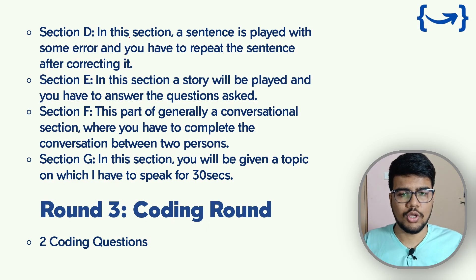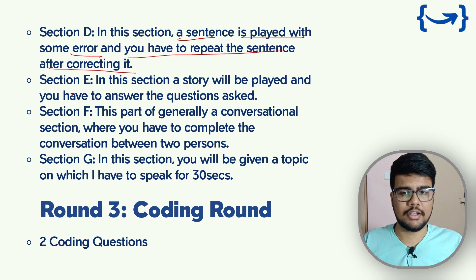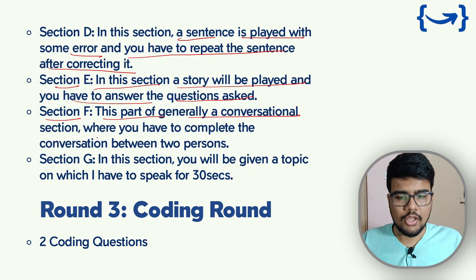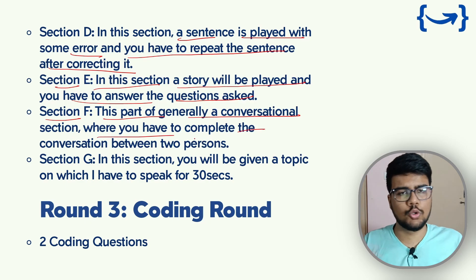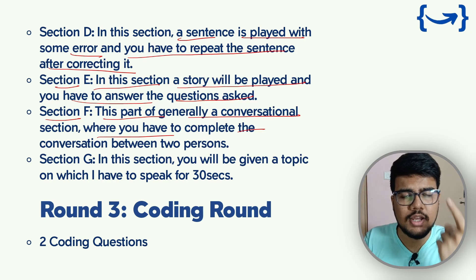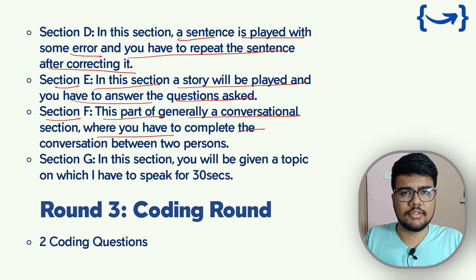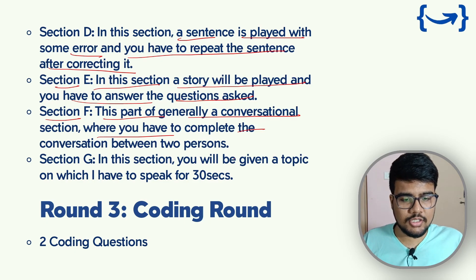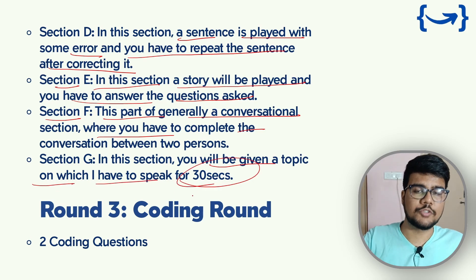Section D plays a sentence with some errors and you have to repeat the sentence after correcting it. Section E plays a story and you have to answer questions about it. Section F is a conversational section where you complete a conversation between two persons — one person asks questions and you answer, while also asking questions back, simulated by AI. Section G gives you a topic on which you have to speak for 30 seconds.